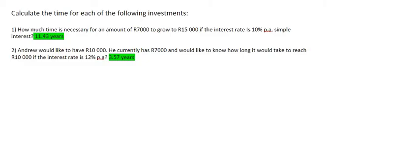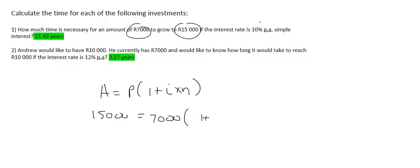Because it's simple interest, we can simply use the simple interest formula. We know that A means the final amount, which they've told us is 15,000 Rand. P is the starting amount, which is 7,000 Rand. The interest rate is 10%, which is the same as 0.1.